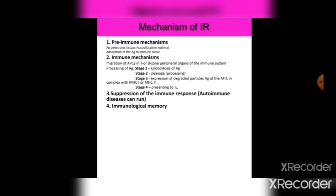The next stage is presenting antigen to T helper cells (Th cells). Following this is the separation of immune response into autoimmune disease pathways and immunological memory.